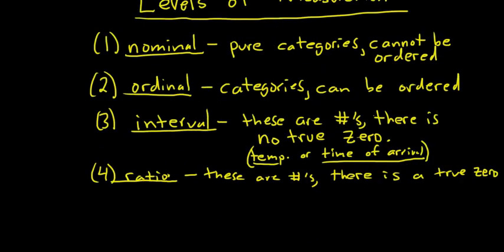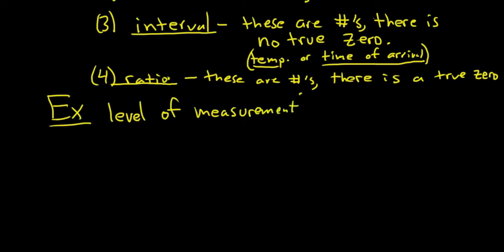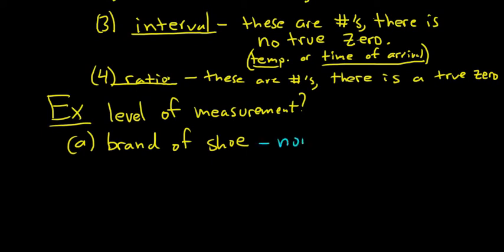Let's do a couple of examples to identify the level of measurement. Example A: brand of shoe — like Nike, Adidas, Reebok, Puma, etc. This is a pure category; you can't order this at all. So the answer would be nominal.